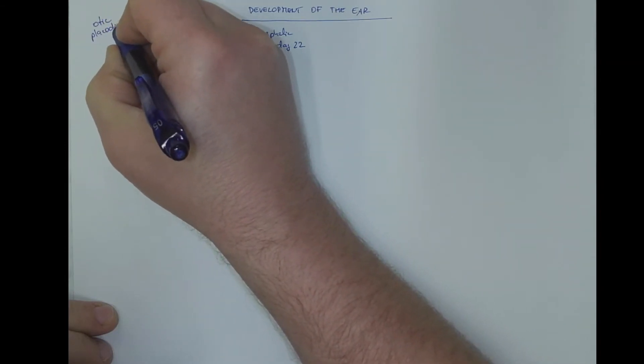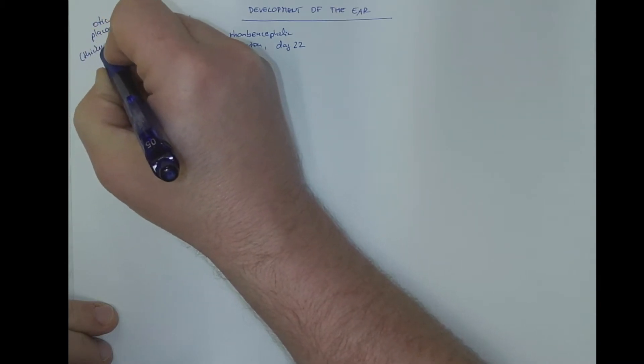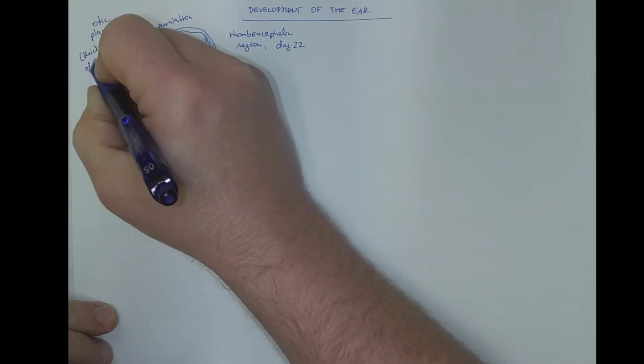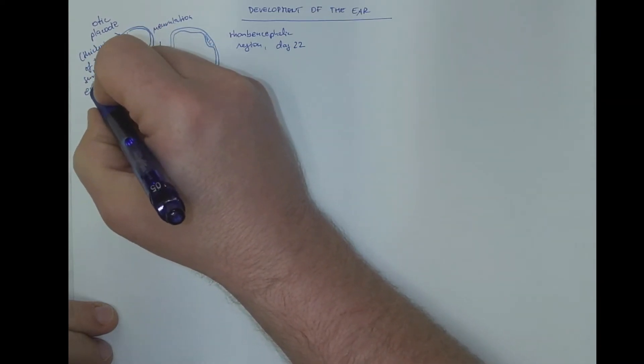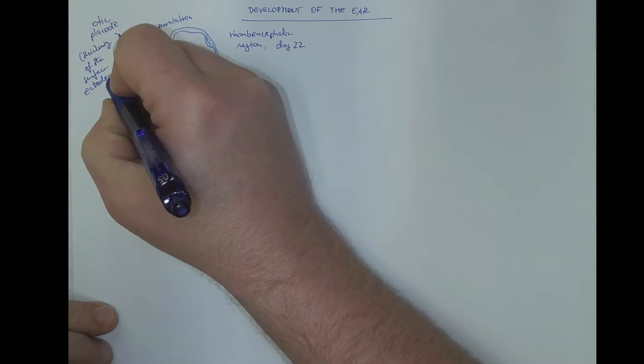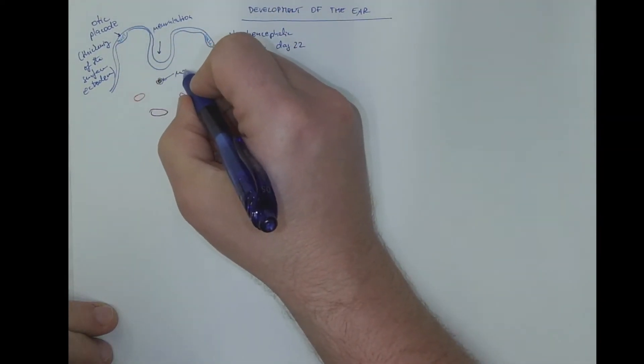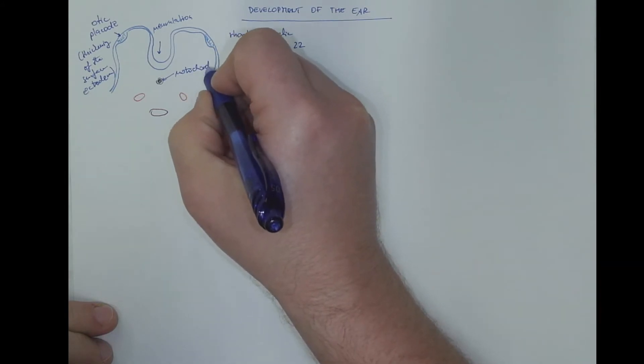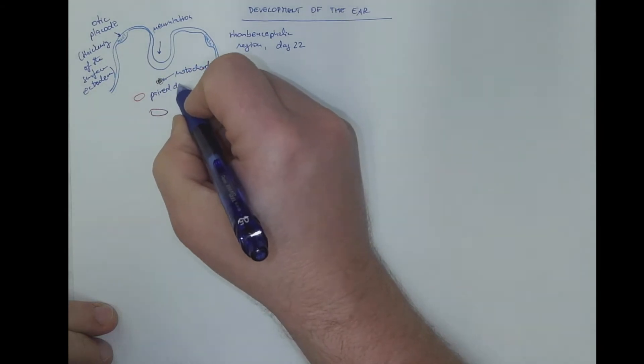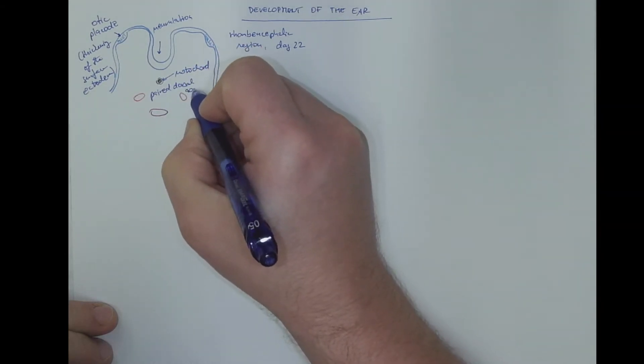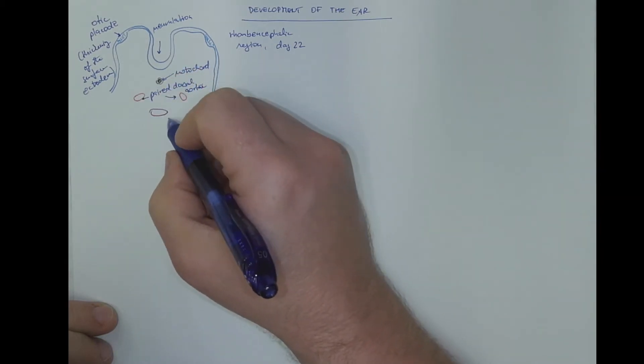The word placode in this context means thickening of the surface ectoderm. This is the notochord, the paired dorsal aorta, and the pharynx.